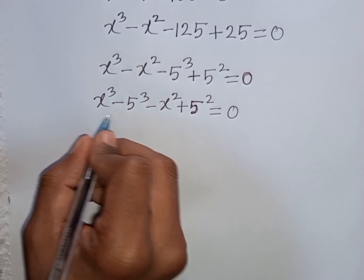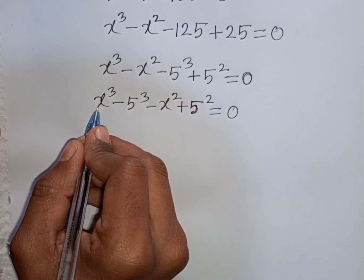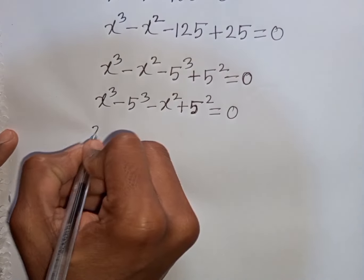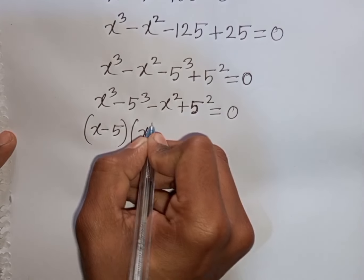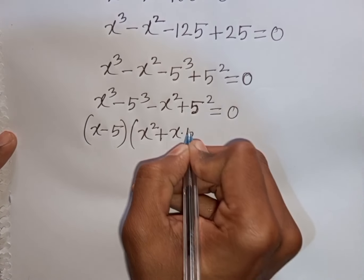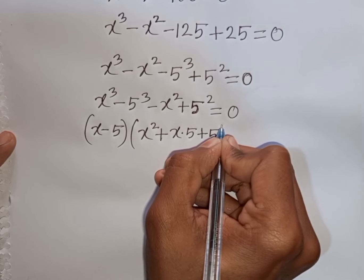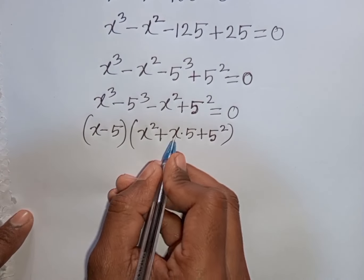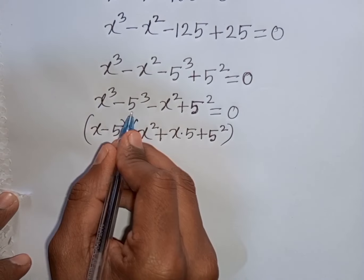Now we can write x³ minus 5³, then minus x² plus 5², equals 0. Here I can apply the formula of a³ - b³, where a = x and b = 5. So according to the formula: (x - 5)(x² + 5x + 25).